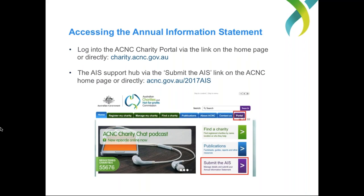Accessing the Annual Information Statement is really easy. On our homepage there are two options: the charity portal in the top right-hand corner, where you log in using your charity's unique user credentials, or via the 'Submit the AIS' link or the AIS hub. The most important thing is that you'll need your username — in all cases that's the ABN — and the password, which as a responsible person for a charity you should have handy.